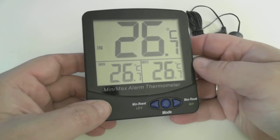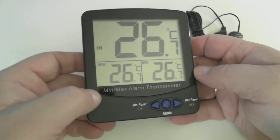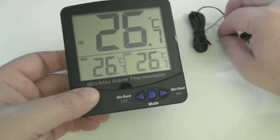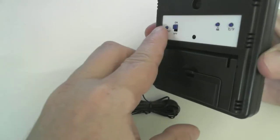That shows the current temperature and the min-max recorded temperatures. Currently, it's showing that we're measuring temperatures from the internal sensor. But if you want to use the external sensor, plug in your probe and hit your in-out button.